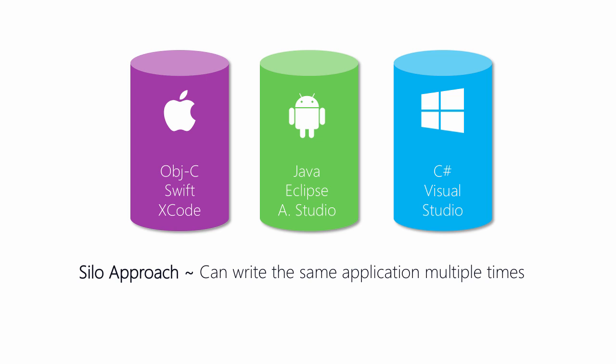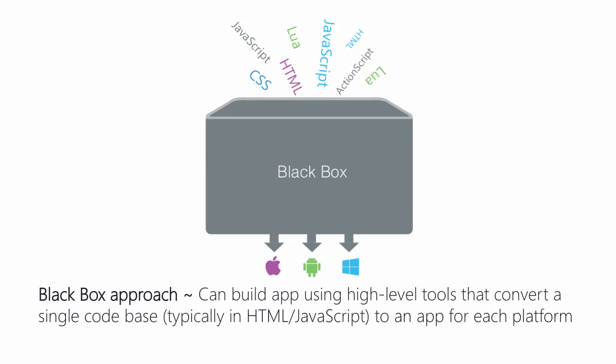The downside, of course, is that we've had to write the application multiple times. That means that we're creating the same bugs multiple times, potentially different bugs on different platforms, and often it means you have to have multiple development teams to support those. And so a lot of people will turn to a different approach, such as the black box approach.